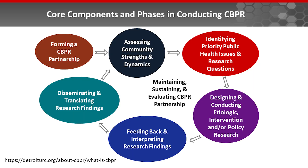As depicted in this figure, there are seven broad components in conducting CBPR. The first core component is forming a CBPR partnership, and this involves processes such as identifying potential partners and communities to be involved, building trust and relationships, and establishing operating norms and CBPR principles.